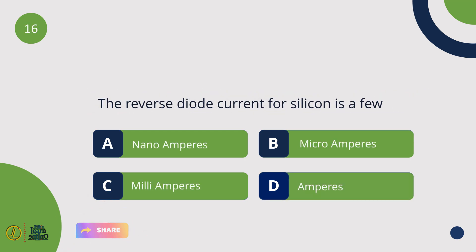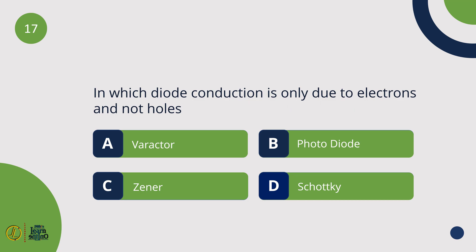The reverse diode current for silicon is a few nanoamps. In which diode is conduction only due to electrons and not holes? Schottky Diode.